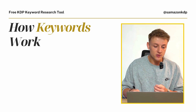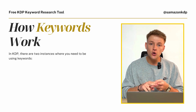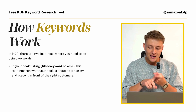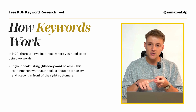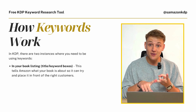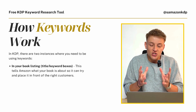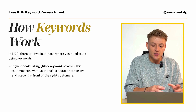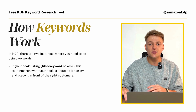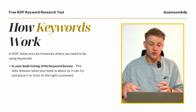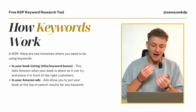In Amazon KDP, there are two instances where you need to be using keywords. Firstly, in your book listings — this is in your title, your subtitle, and your seven backend keyword boxes. The goal of these keywords is just to tell Amazon about what your book is about, so Amazon can then try and place it in front of the right customers, what we call organic ranking. The second place you'll use keywords is in your Amazon ads.